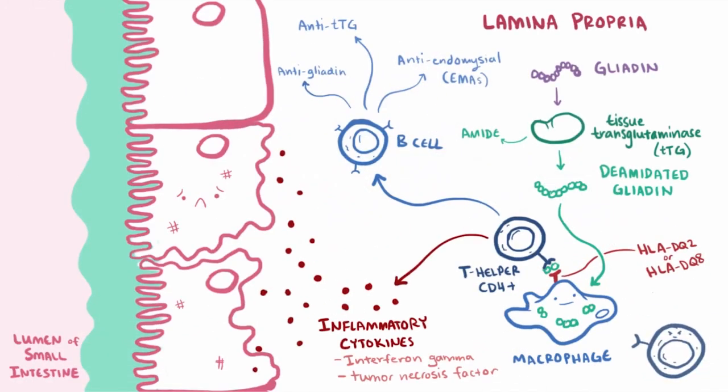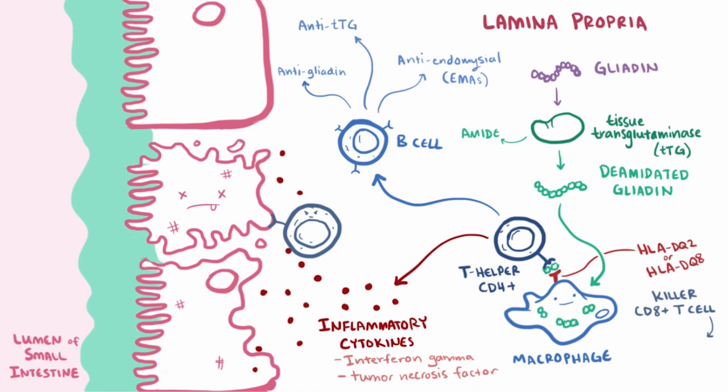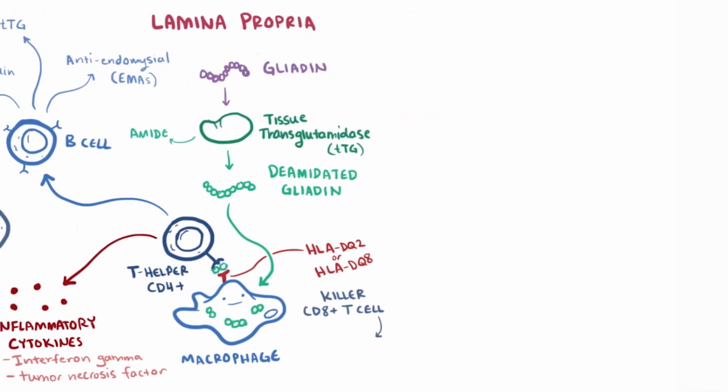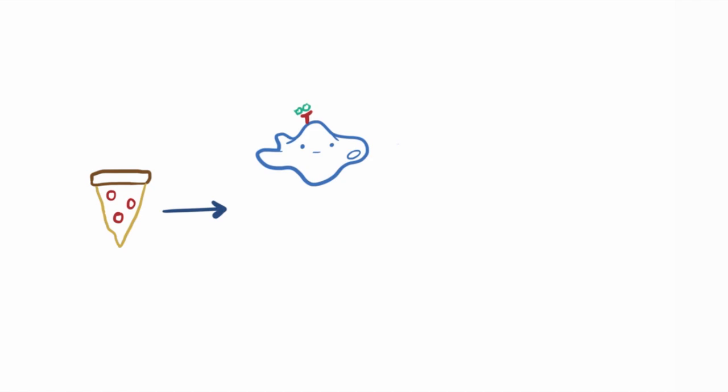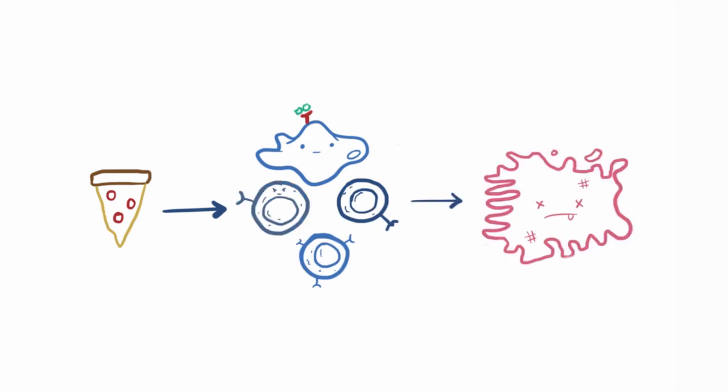Finally, the helper T cells also recruit killer CD8 plus T cells, which is when things start to get nasty. Killer T cells are drawn to and destroy cells undergoing inflammation. So, in short, as patients eat gluten, the immune system is stimulated and epithelial cells are destroyed.